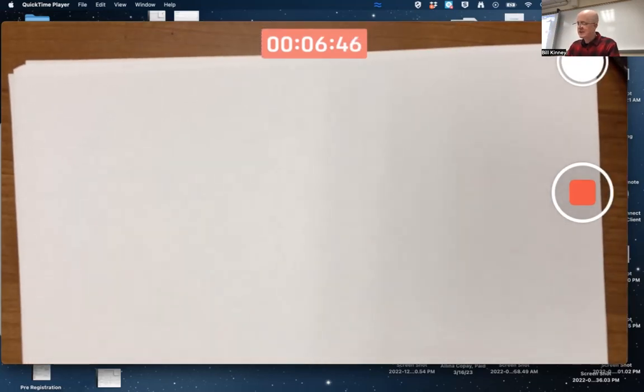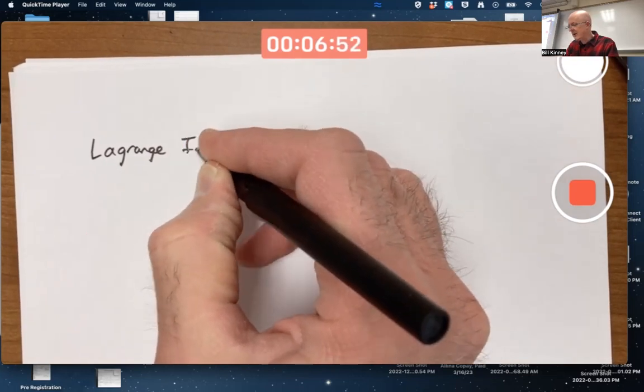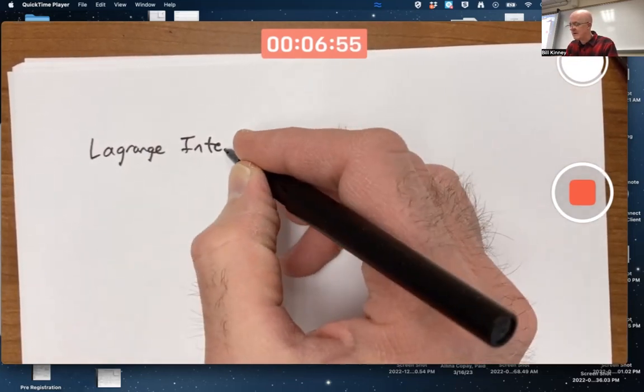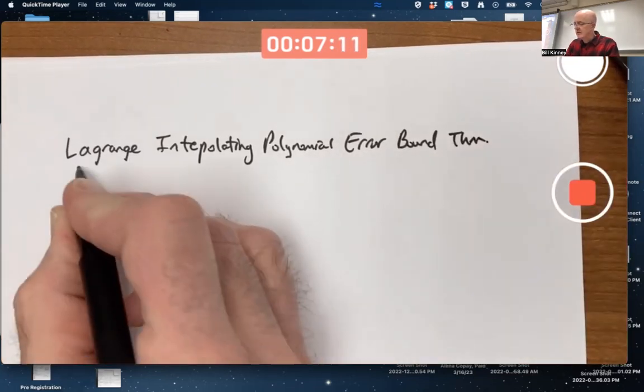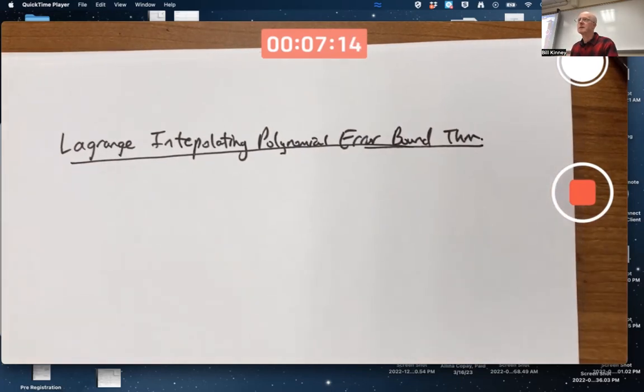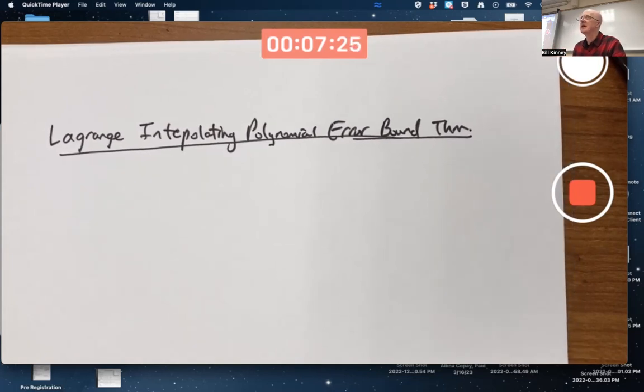Our first topic today is to look at the Lagrange Interpolating Polynomial Error-Bound Theorem. It's similar to Taylor's Theorem. Remember, Taylor's Theorem is about using Taylor polynomials to approximate functions near a point x0, one node you might say.